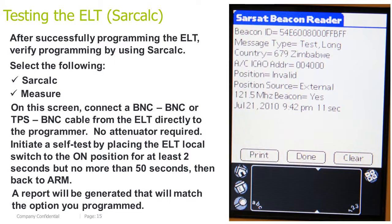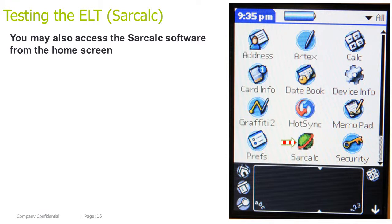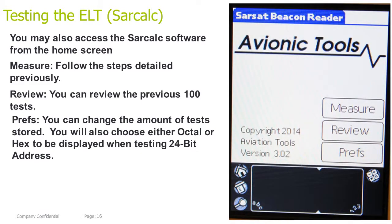A report will be generated that will match the option you programmed. You may also access SARCALC from the home screen. Once accessed, you will have three options: Measure, which follows the same steps just defined; Review, which allows you to review the previous 100 tests; and Preferences, where you can change the number of tests stored and choose between octal or hex address display when testing 24-bit address protocols.